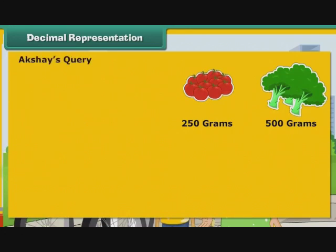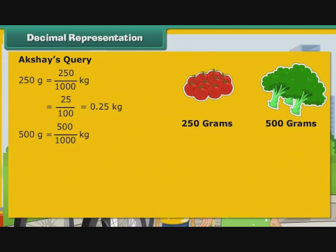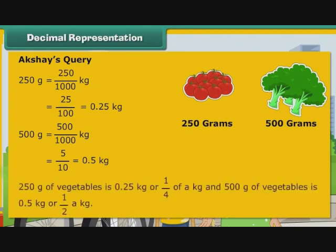Let us now express the vegetables Akshay's mother purchased as kilograms. 250 grams is equal to 250 by 1000 kg, that is equal to 25 by 100 kg, that is equal to 0.25 or 1 by 4 kg. 500 grams is equal to 500 by 1000 kg, that is equal to 5 by 10 kg, that is equal to 0.5 or 1 by 2 kg. So 250 grams of vegetables is 0.25 kg and 500 grams of vegetables is 0.5 kg or half a kg.